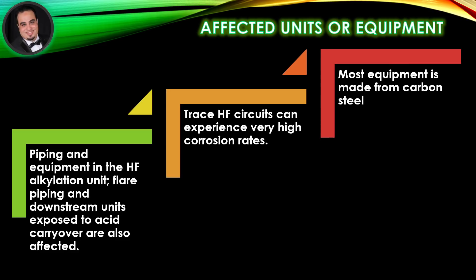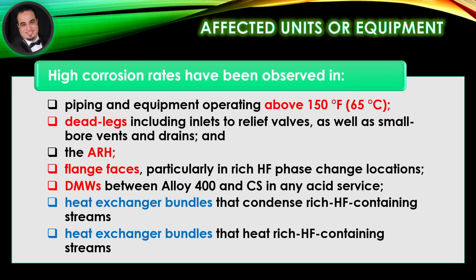Affected units or equipment: Piping and equipment in the HF alkylation unit, flare piping and downstream units exposed to acid carryover are also affected. Trace HF circuits can experience very high corrosion rates. Most equipment is made from carbon steel. High corrosion rates have been observed in piping and equipment operating above 150 degrees Fahrenheit.